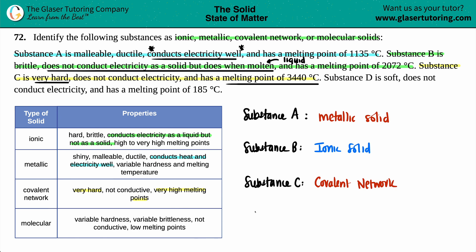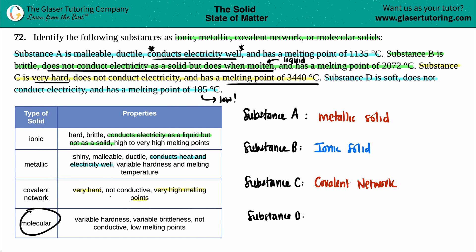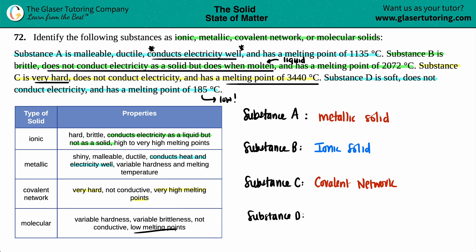And now the last substance — let's just make sure it makes sense. Substance D is soft, does not conduct electricity, and has a melting point of 185 degrees Celsius. This is a very low melting point compared to 3,000, 2,000, and 1,000. Molecular checks out here — variable hardness, variable brittleness, does not conduct electricity, and very low melting points. The 185 right here confirms it. So this would be molecular.